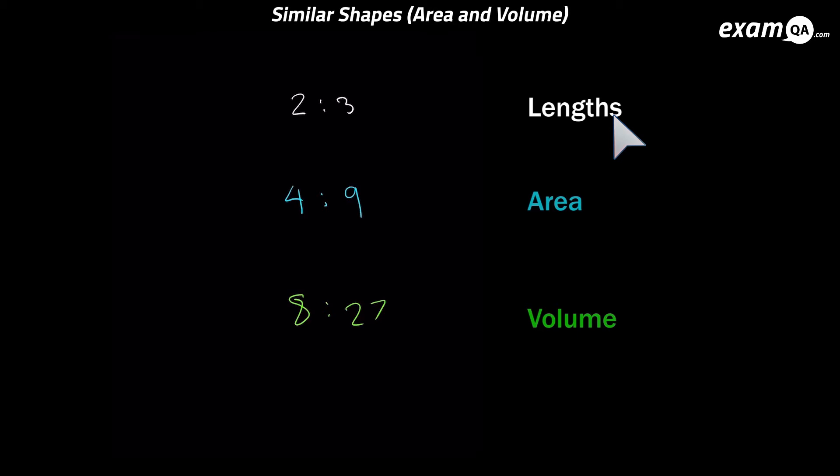Sometimes you'll know the volume scale factor and you need the area one. How do you do that? You'd cube root it to go back to lengths, and then you'd square it to get to area. Let's have a look at an example.